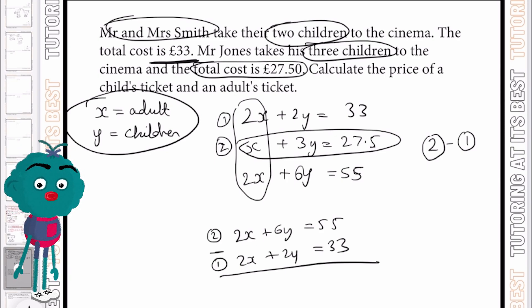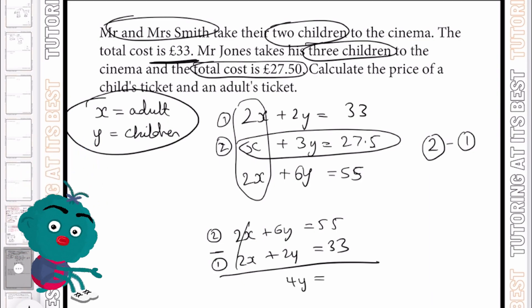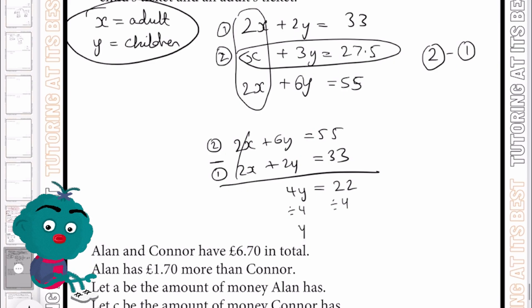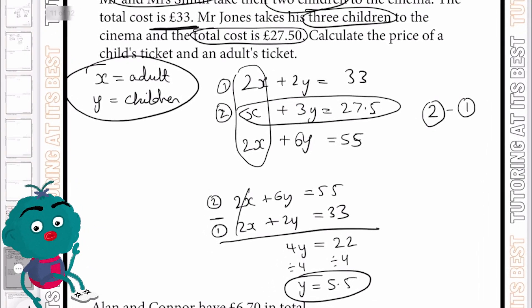That's equation two, subtracting equation one. That leaves us with 4y, which equals 22. And if we divide both sides by four, we'll be left with y, which equals £5.50. So now we know that the cost of a child ticket is £5.50. Let's go ahead and substitute this.